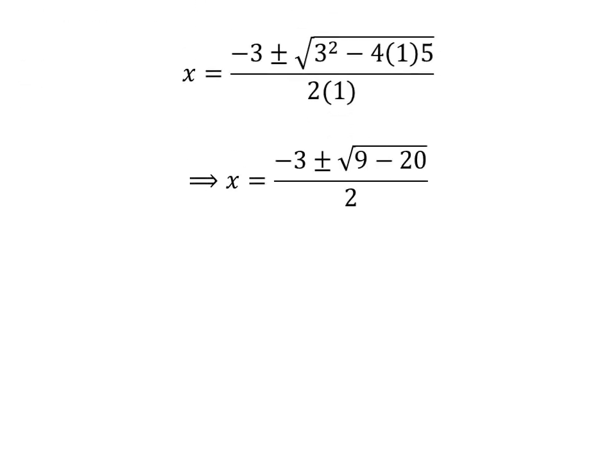Further simplification gives us x = (-3 ± √(9 - 20)) / 2.